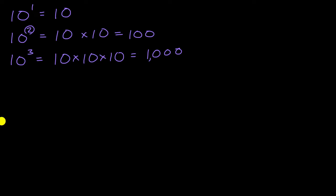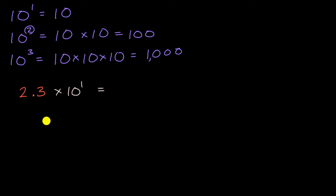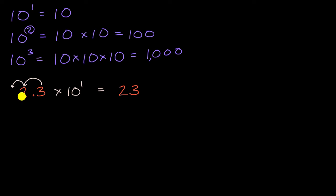Let's start with the number 2.3, and multiply it by 10 to the first power. That's the same thing as just multiplying by 10. When you multiply by 10, you shift all the digits one place to the left. The two, which is in the ones place, will end up in the tens place, and the three, which is in the tenths place, will end up in the ones place. So this equals 23. As a reality check: 2 times 10 is about 20, so 2.3 times 10 being 23 makes sense.